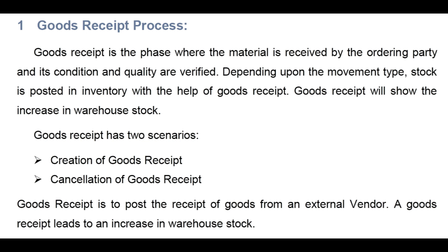The goods receipt process models receiving goods from a supplier. It is a very essential part of any company's supply chain. As part of the purchasing process, you can create a purchase order or scheduling agreement, and you can use these documents to create inbound deliveries. When a delivery is on the way, you can create an inbound delivery to document the incoming goods.